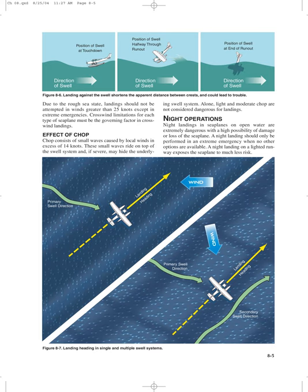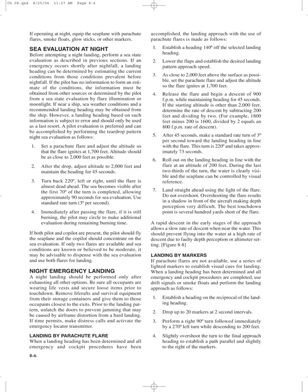Night landings in seaplanes on open water are extremely dangerous with a high possibility of damage or loss of the seaplane. A night landing should only be performed in an extreme emergency when no other options are available; a night landing on a lighted runway exposes the seaplane to much less risk. If operating at night, equip the seaplane with parachute flares, smoke floats, glow sticks, or other markers. Before attempting a night landing, perform a sea state evaluation as described. If an emergency occurs shortly after nightfall, a landing heading can be estimated from conditions prevalent before nightfall. If the pilot has no such information, it must be obtained from other sources or determined by sea state evaluation using flare illumination or moonlight. If near a ship, sea weather conditions and a recommended landing heading may be obtained from the ship, though this is subject to error and should only be used as a last resort.